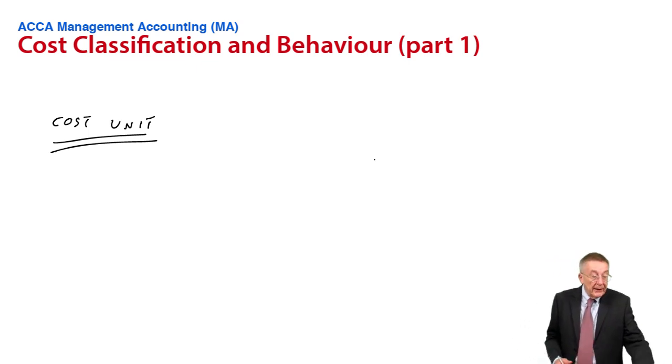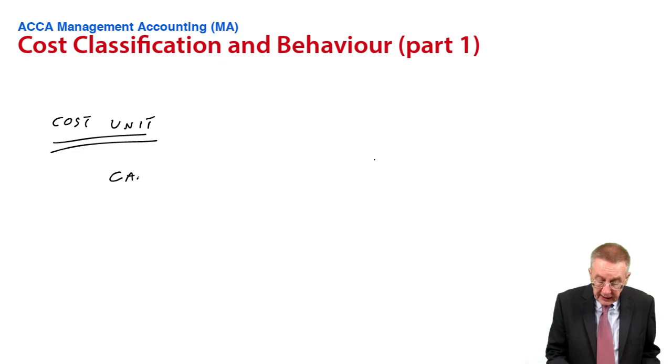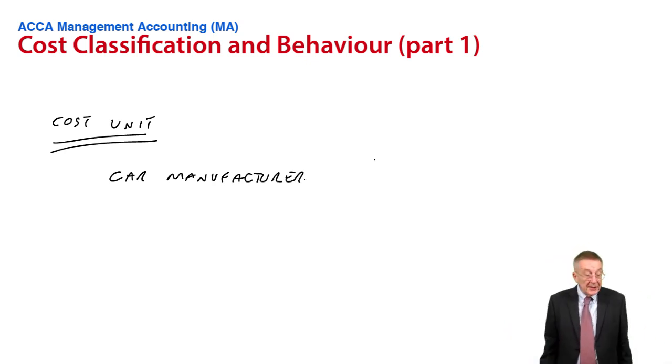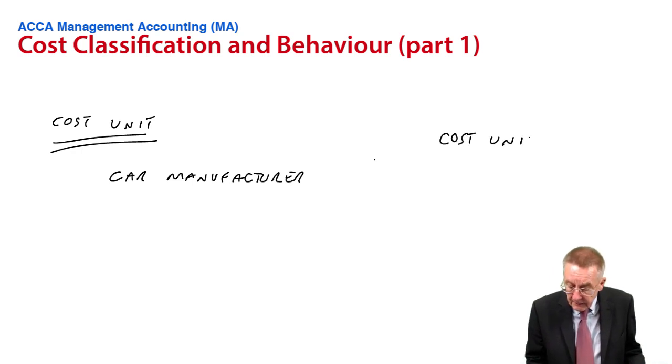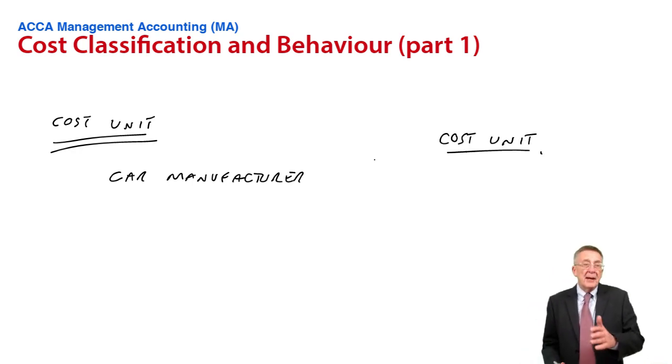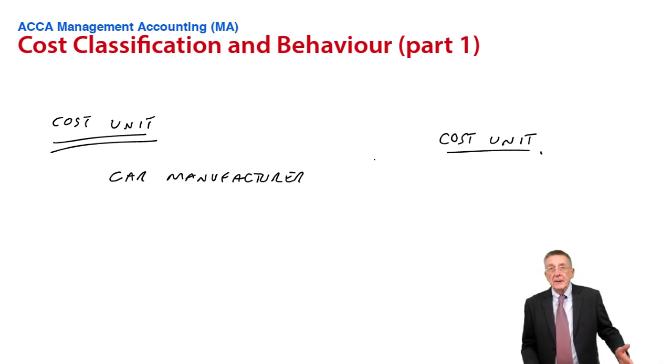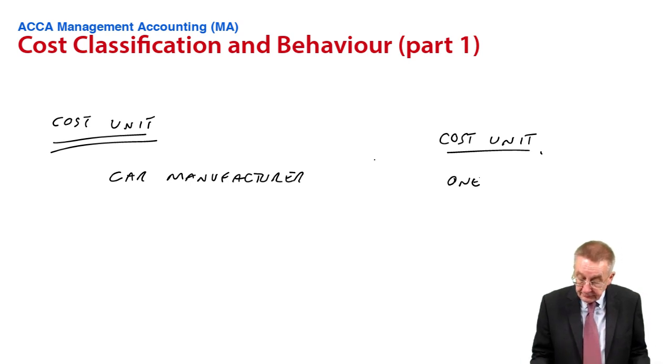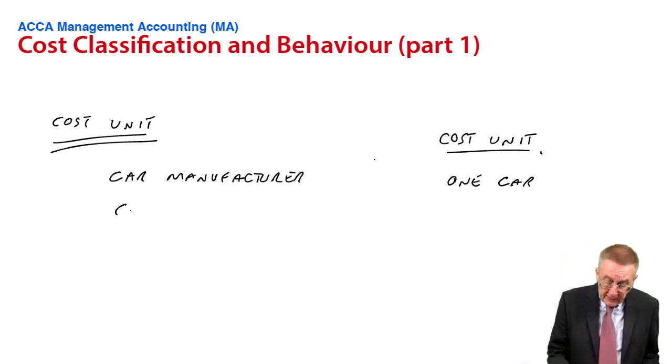Look at example one. It says, suggest appropriate cost units for the following businesses. First of all, a car manufacturer. Now, the trouble is I can't see or hear you, otherwise I'd ask you to suggest a cost unit. But this, I think, is very much like the desks. You know, a car manufacturer is making thousands of identical cars. The obvious thing to measure the cost of is one car. That would be our cost unit.